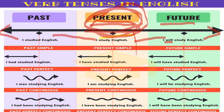Present continuous: 'I am studying English' — it is happening right now. Note the spelling of 'studying.' Past continuous: 'I was studying English.' Future continuous: 'I will be studying English' — in continuous tense, 'will be' is used.